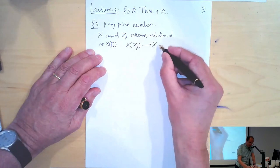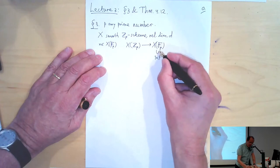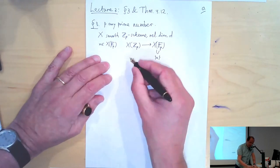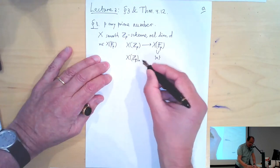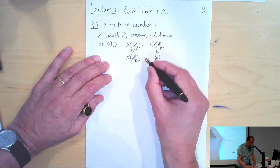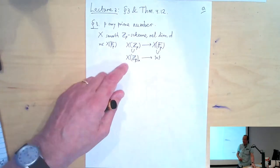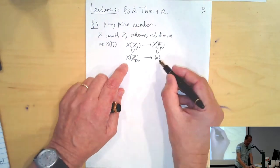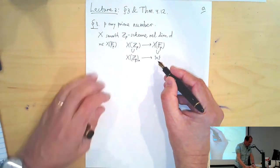We look at the reduction map from X(Z_p) to X(F_p). The inverse image of the point x under this map is the residue polydisc of the point little x.